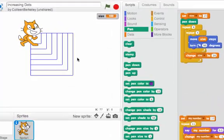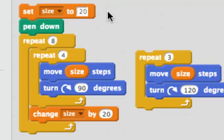Here I've made a script to draw eight bigger and bigger squares. Here's the code. I set the size to 20, put the pen down, and then I'm going to repeat everything inside of here eight times for eight shapes.